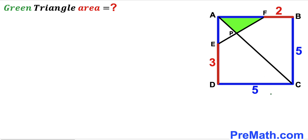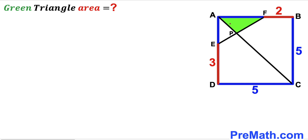Welcome to pre-math. In this video we have got this blue square ABCD, as you can see in the given diagram, such that its side length is 5 units. The diagonal AC and segment EF intersect each other at point P, resulting in this green shaded triangle AFP. Furthermore, segment BF is 2 units, segment DE is 3 units, and our task is to calculate the area of this green shaded triangle AFP.